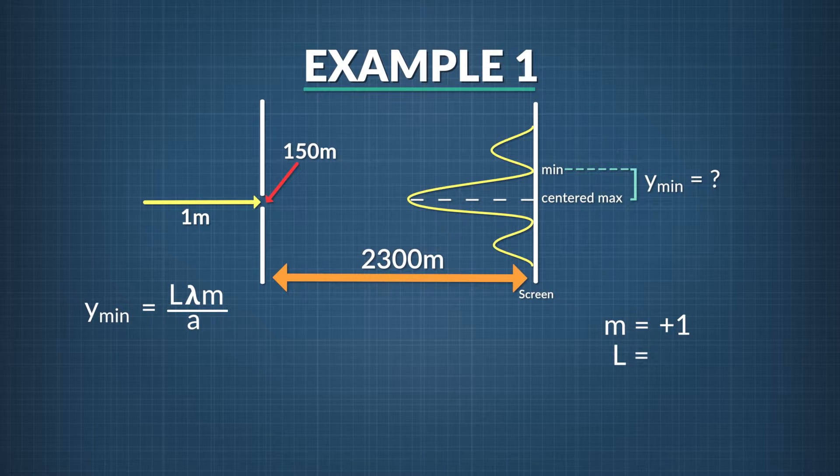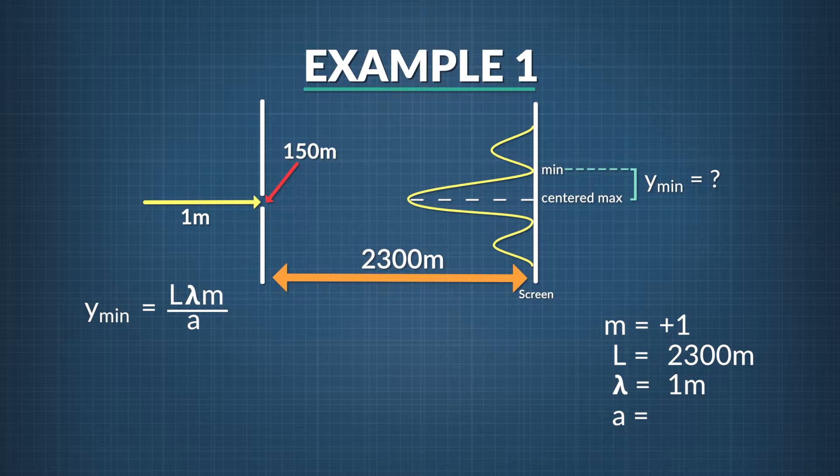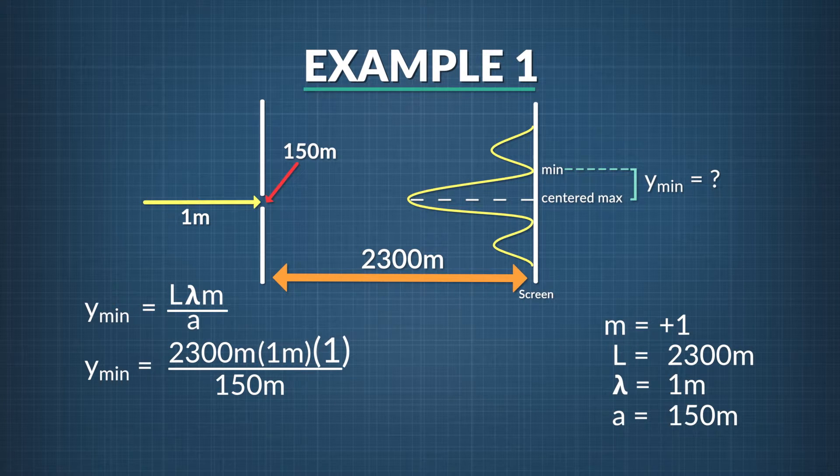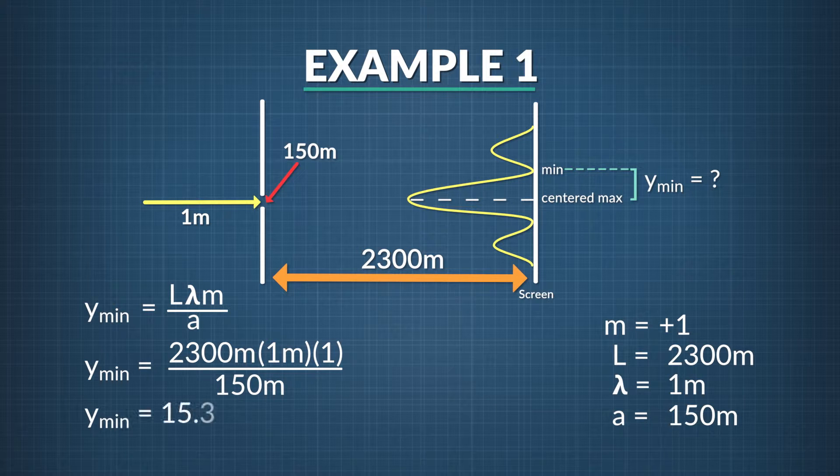Let's insert the values we know for the other parameters. L is the distance between the slit and the screen, that's given as 2,300 meters. Lambda, the wavelength of our wave, is 1 meter. And a, the width of the slit, we're told is 150 meters. So y_min equals 2,300 meters times 1 meter times 1 divided by 150 meters, which equals 15.3 meters.